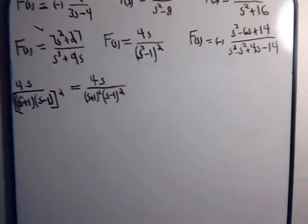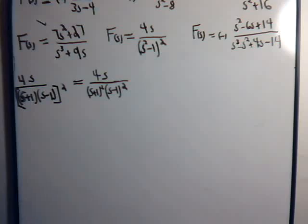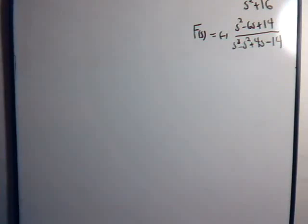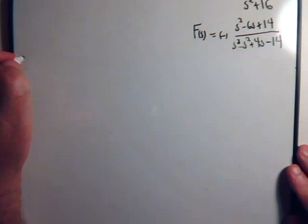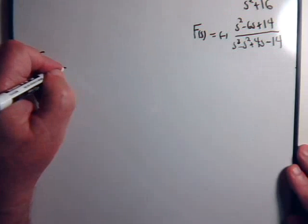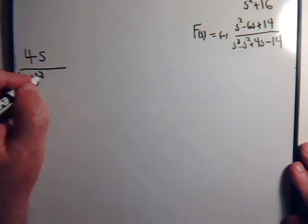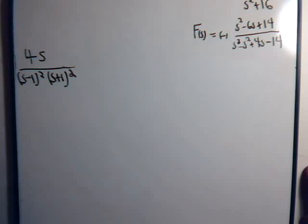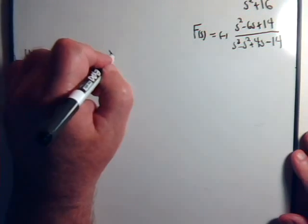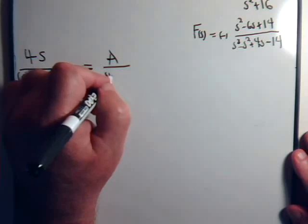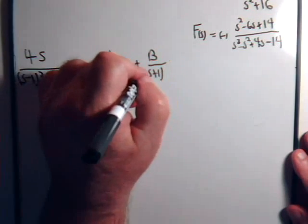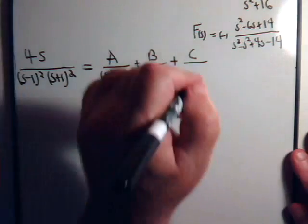So we want to use partial fractions. We have 4s divided by s minus one squared times s plus one squared. These are both linear terms, but both of them are squared. When we use the method of partial fractions, it's going to look like this: A over s plus one squared, plus B divided by s plus one, plus C divided by s minus one squared.